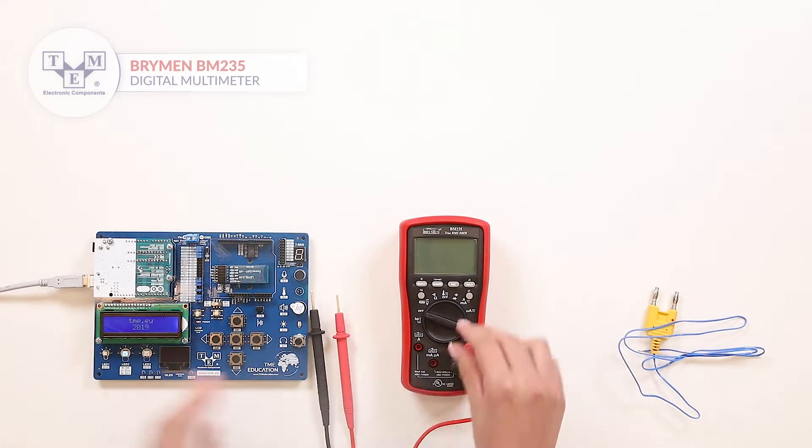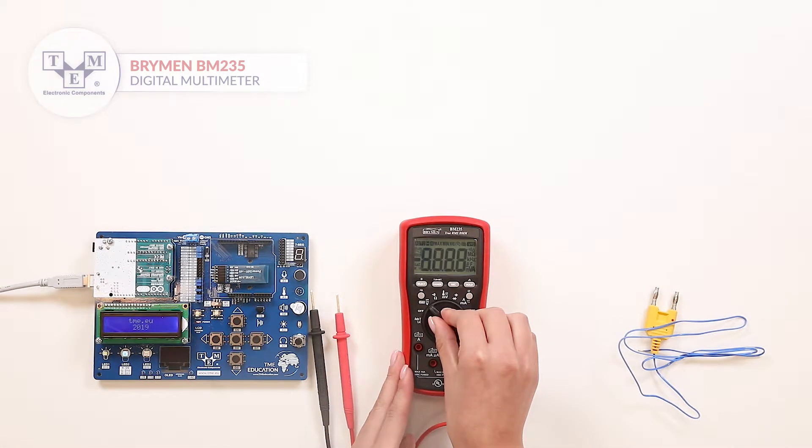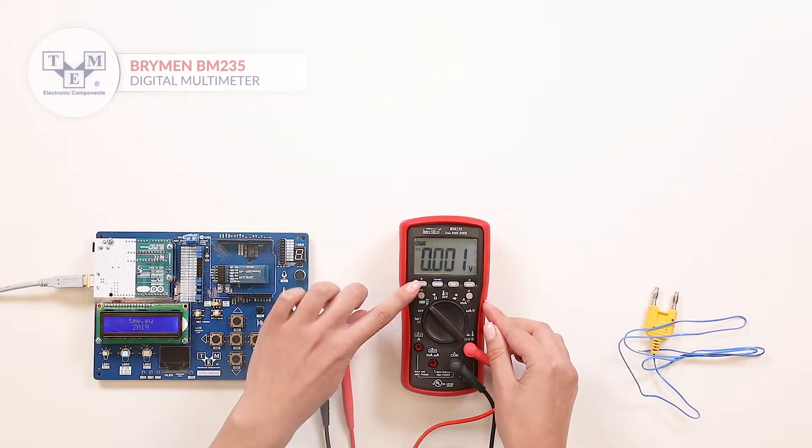The meter has 6000 counts LCD display with backlighting and two range modes, automatic and manual.